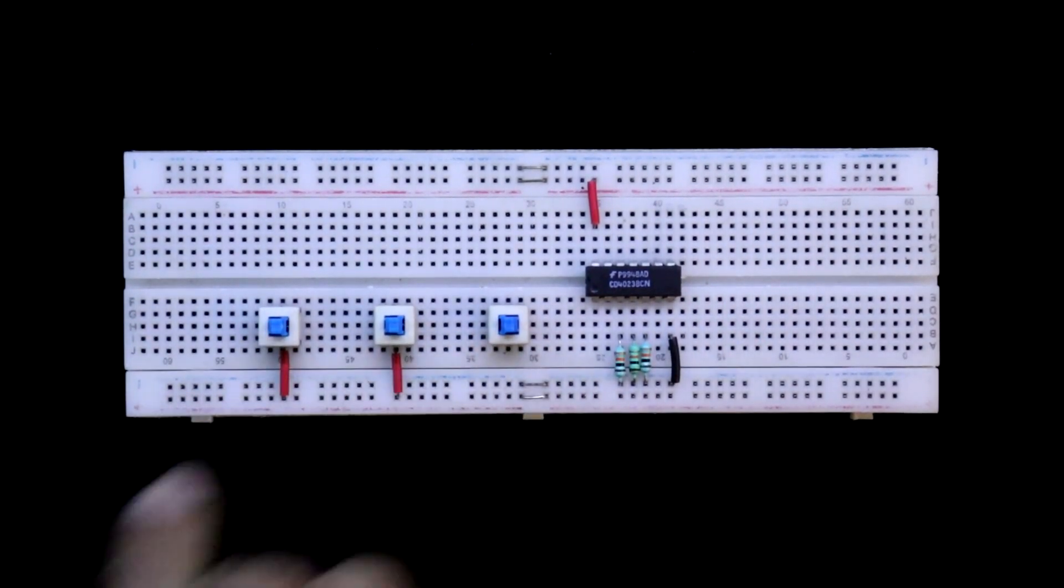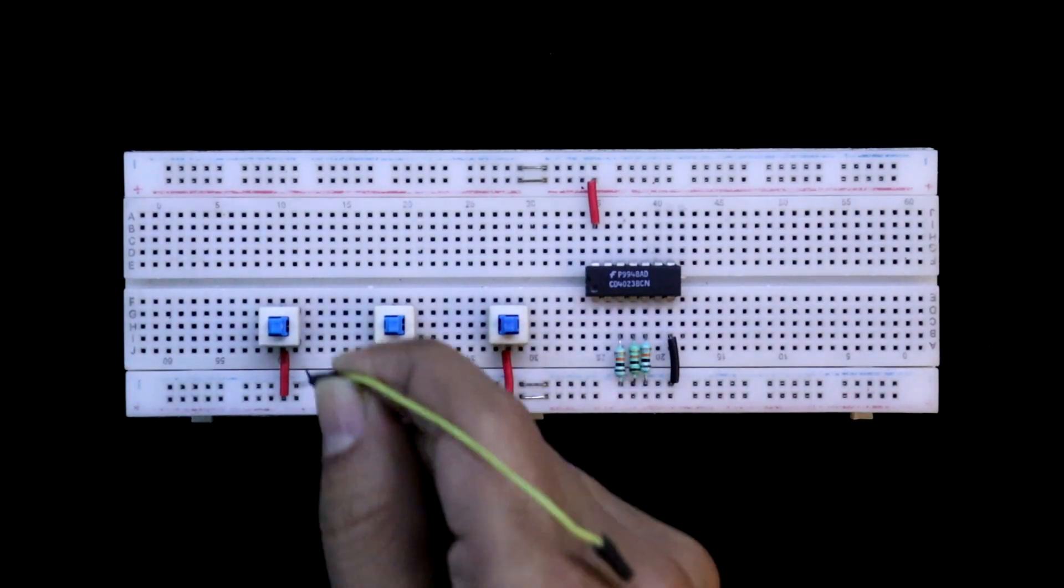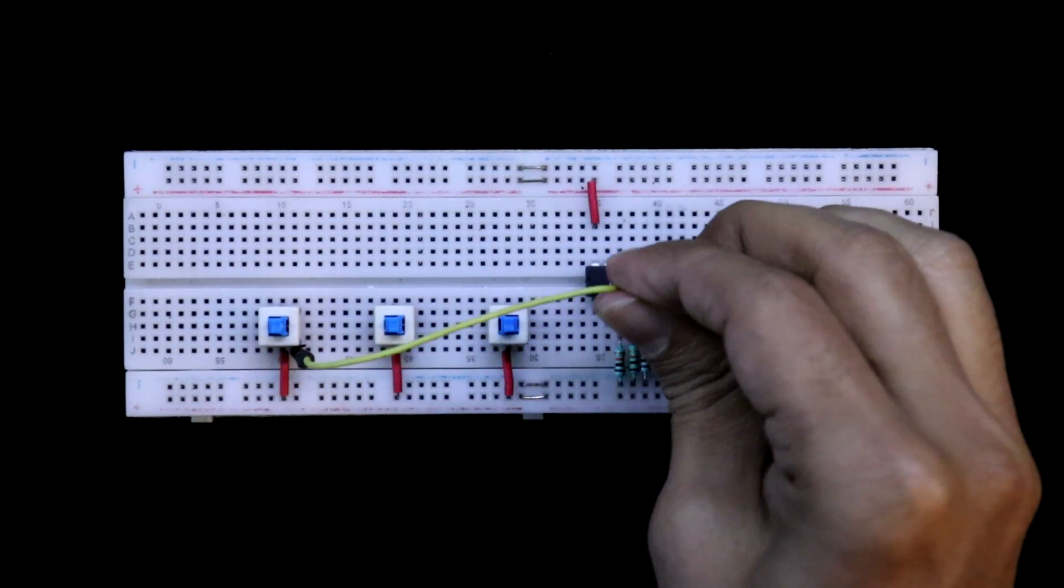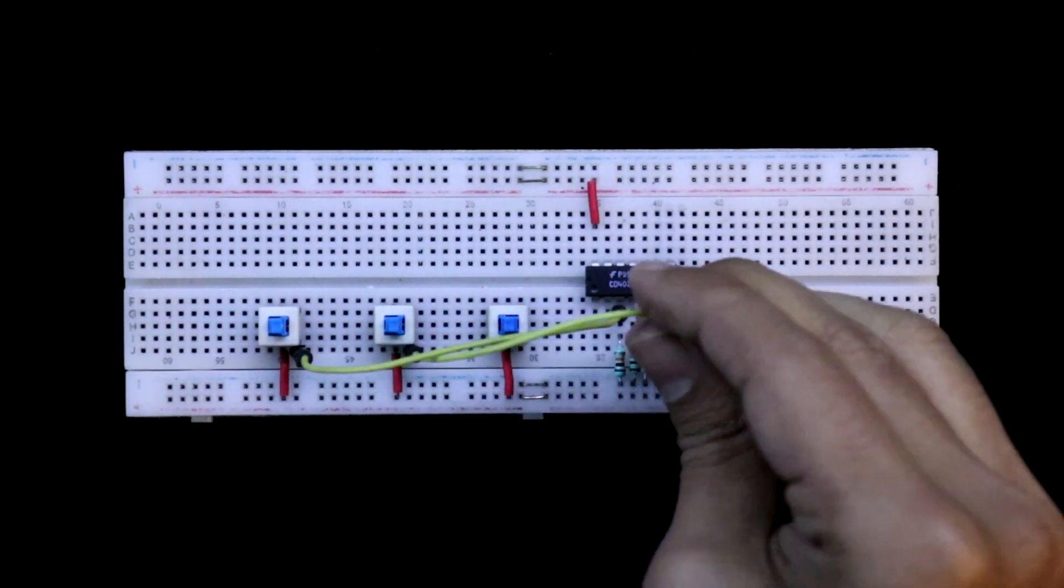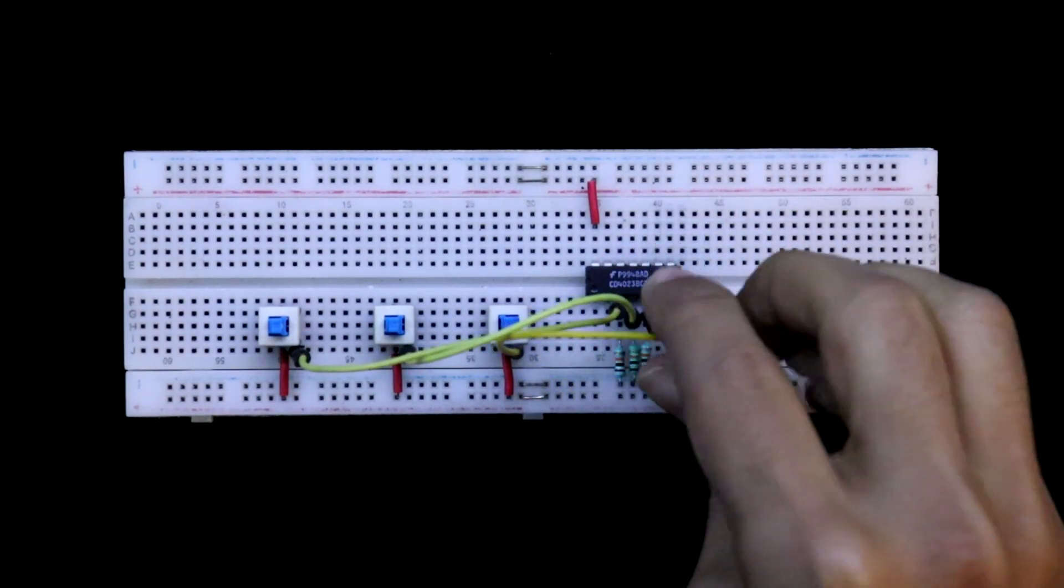One pin of the switch is connected to the plus VCC. Switch 1 is connected to pin 3. Switch 2 to the pin 4. Switch 3 to the pin 5.